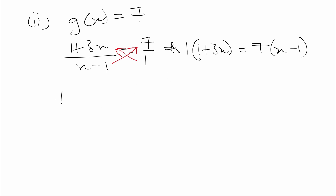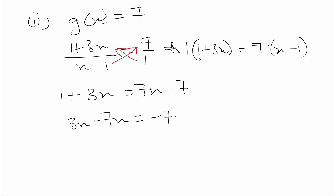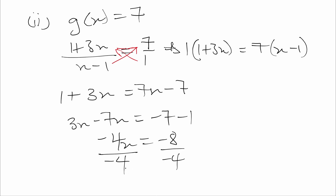We have 1 × (1 + 3x) = 7 × (x - 1). So 1 + 3x = 7x - 7. Grouping like terms: 3x - 7x = -7 - 1, giving -4x = -8. Dividing both sides by -4, x = 2.